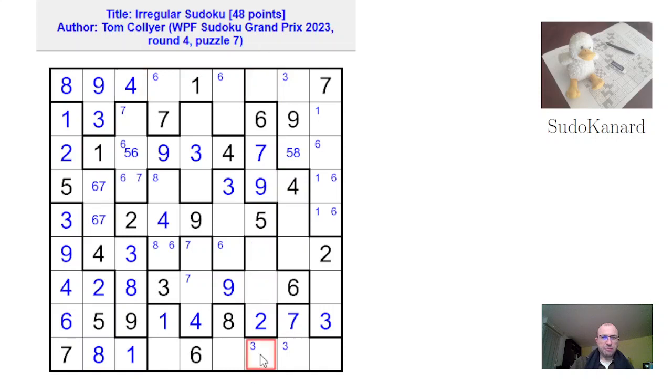So 4 is not here. It's not here. So on this column, 4 is here. And it pushes the 3 to this cell. That's not a 3. 3 is pushed into this cell. Here we get 1 and 8. But there's an 8 here.